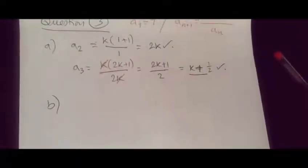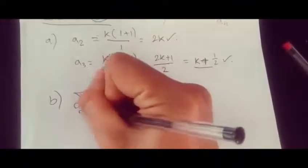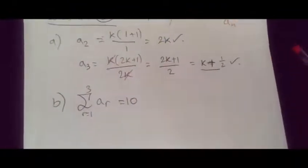Here we're given the fact that the summation of ar for r equals 1 to 3, in other words the first three terms, is equal to 10, and they want us to find the value of k.